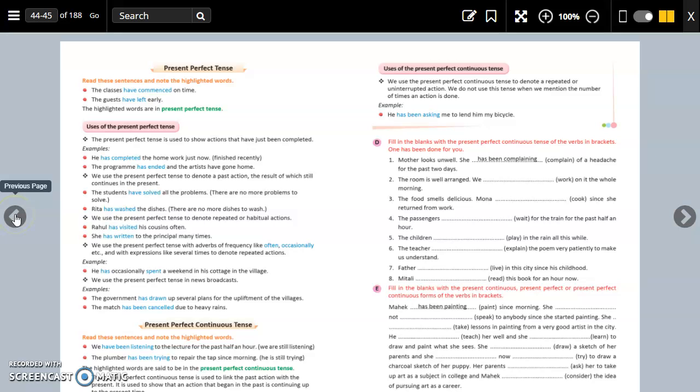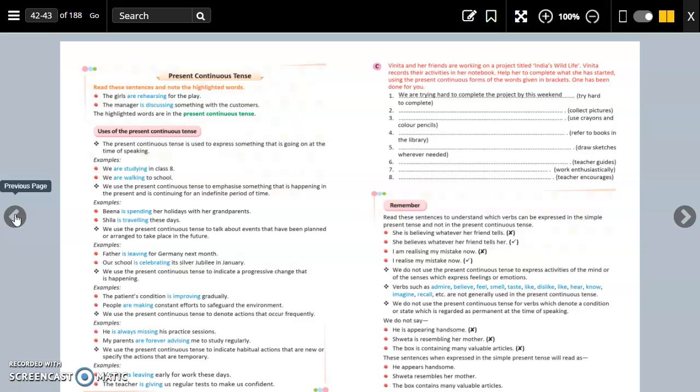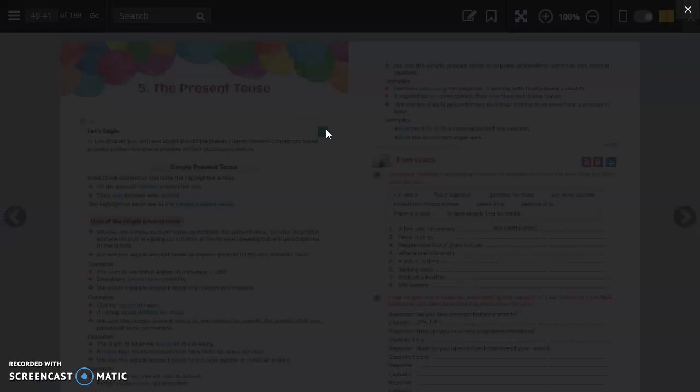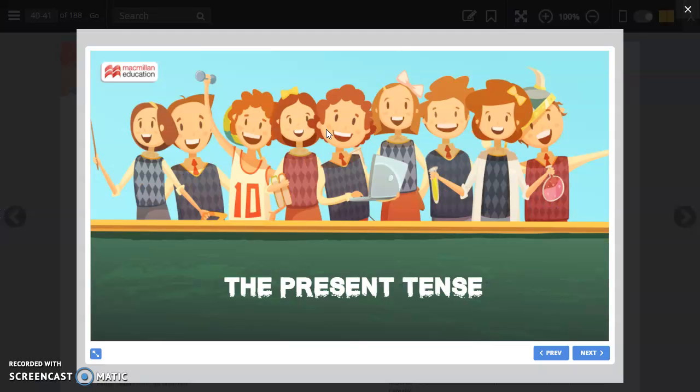So present tense has four types. Present tense means something which is happening in the present, now. So it is of four types: simple present tense, present continuous tense, present perfect tense, and present perfect continuous tense. We will have a slide show related to it. The present tense. What is present tense?